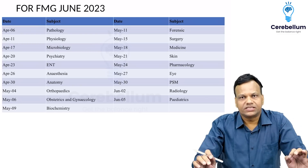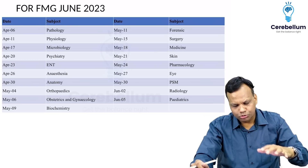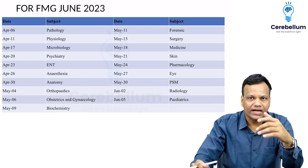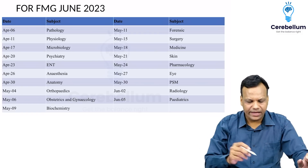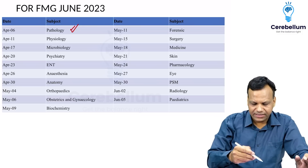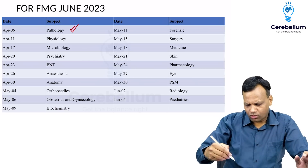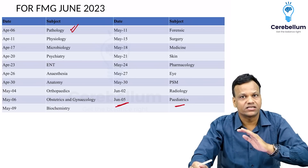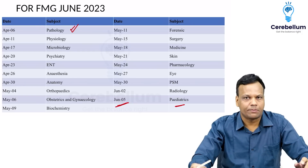For FMG, we cannot teach you everything in this small time. How you utilize these sessions is: finish the subject according to the session schedule, come prepared, and revise. Pathology was already done by Dr. Spurge on 6th April, and today there is a physiology session by Dr. Pooja. We have sessions planned till 5th of June, covering all 19 subjects — all 19 will be completed. These sessions are for Cerebellum subscribers.